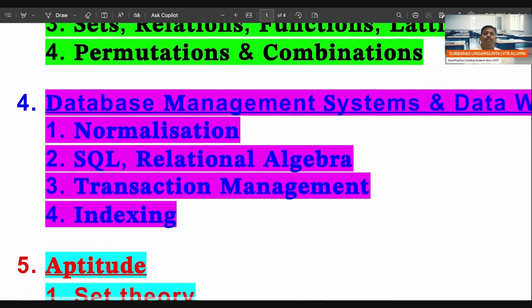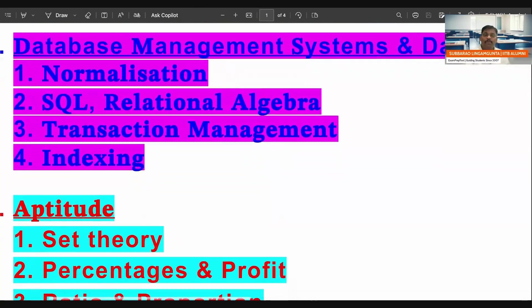Let's go to database management. In database management, normalization - compulsory, every year one question is coming. SQL, RA - I think minimum one question, maximum 2 or 3 questions are coming. Please have a look. Transaction management, view serializable, conflict serializable, about serializability, concurrency - they may ask you. Please have a look. Indexing, B trees, B+ trees also. Please take care.